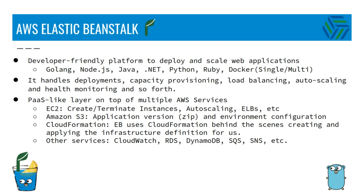In a nutshell, CloudFormation allows us to describe the infrastructure in JSON format and we can use that definition to create the actual infrastructure. Elastic Beanstalk uses CloudFormation behind the scenes, creating and applying the infrastructure definitions for us.